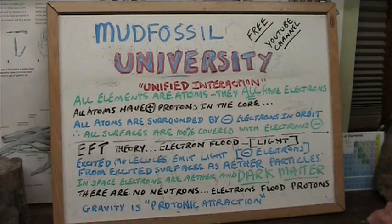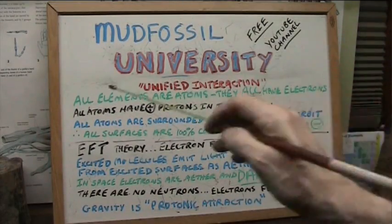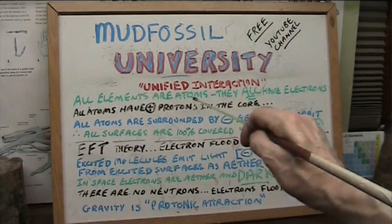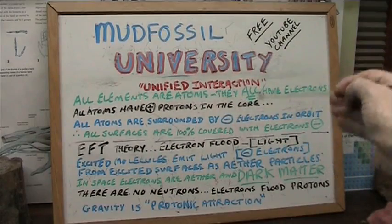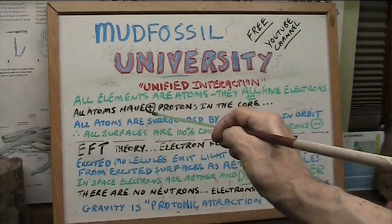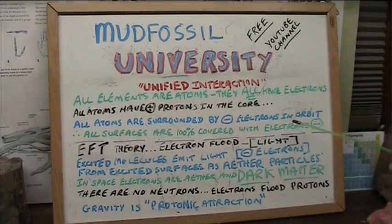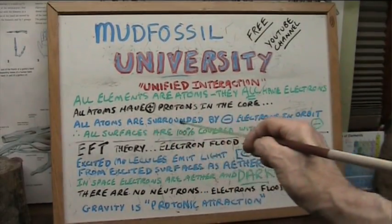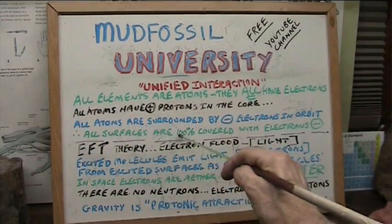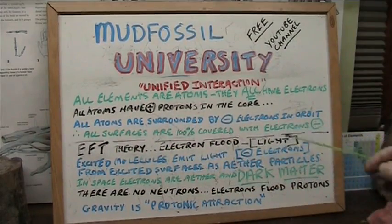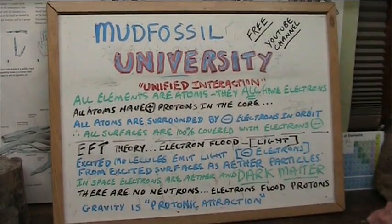What it is, is collisions. That's all that makes matter — collisions. All elements are atoms. They all have electrons coating their protons. All atoms have positive protons in the core — nobody will dispute that. All atoms are surrounded by negative electrons in orbits. Therefore, all surfaces are 100% covered with electrons — everything you see has electrons coating it like paint. Nobody can deny that.